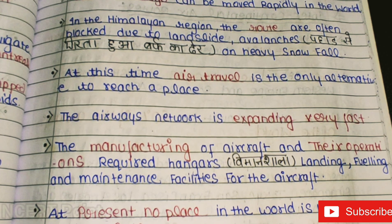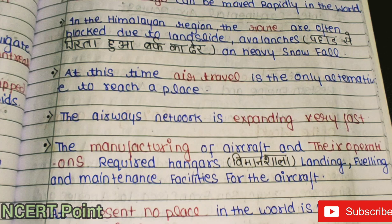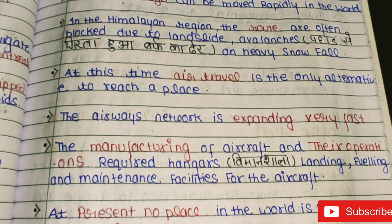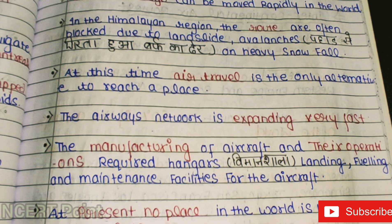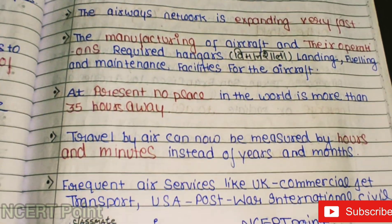The airways network is expanding very fast. As competition increases, it will also become cheaper. Domestic flights have also increased greatly. The manufacturing of aircraft and their operations require hangars — places where aircraft are parked — as well as landing, fueling, and maintenance facilities.